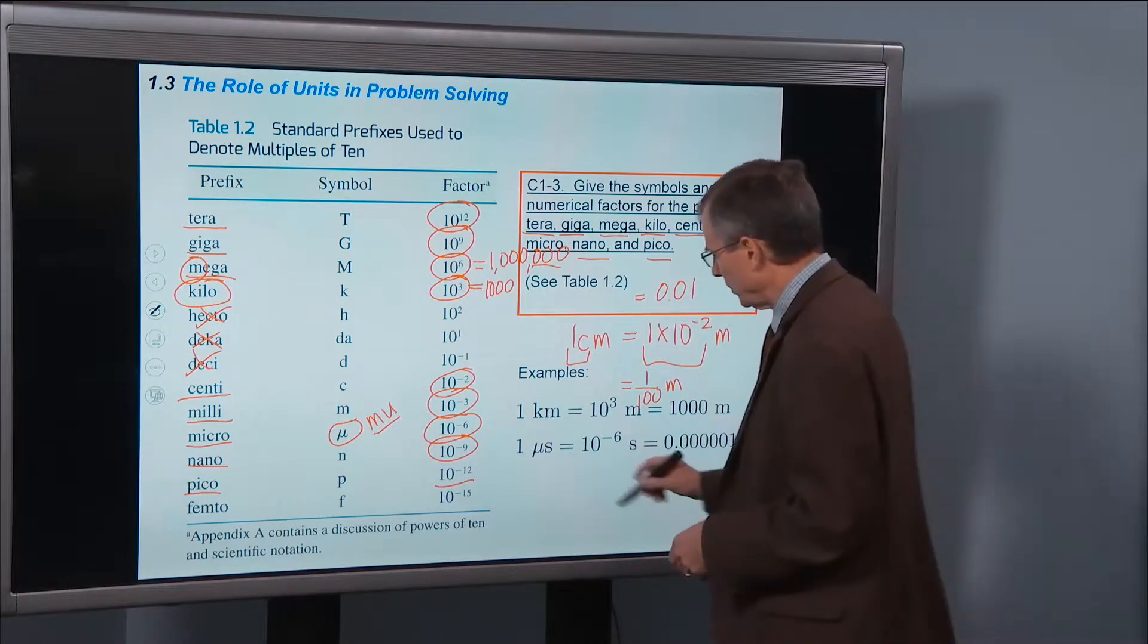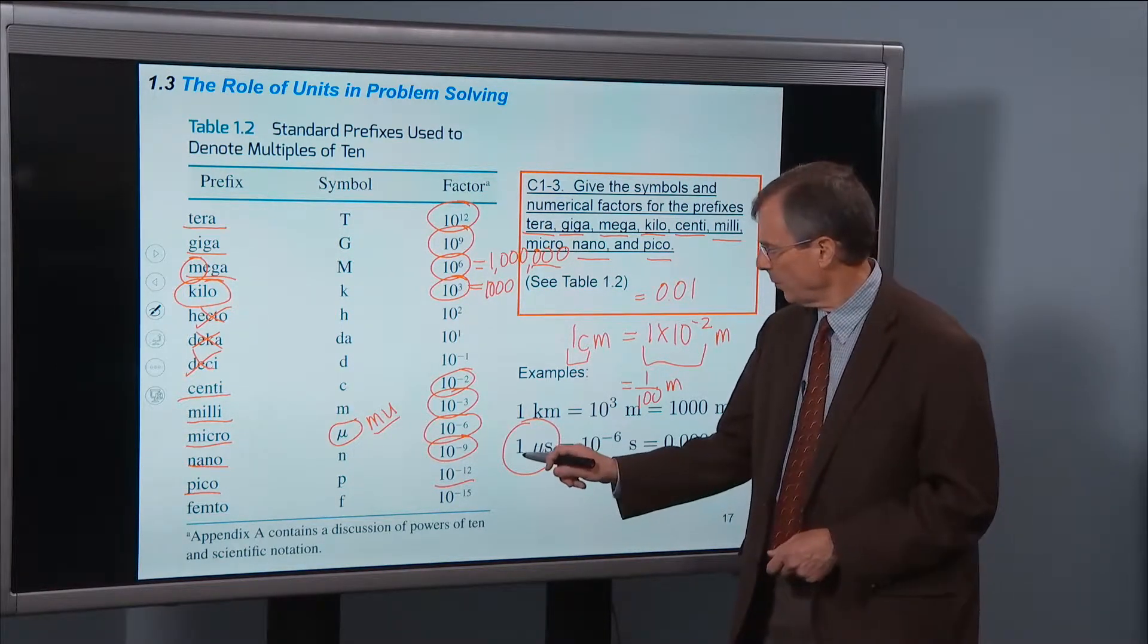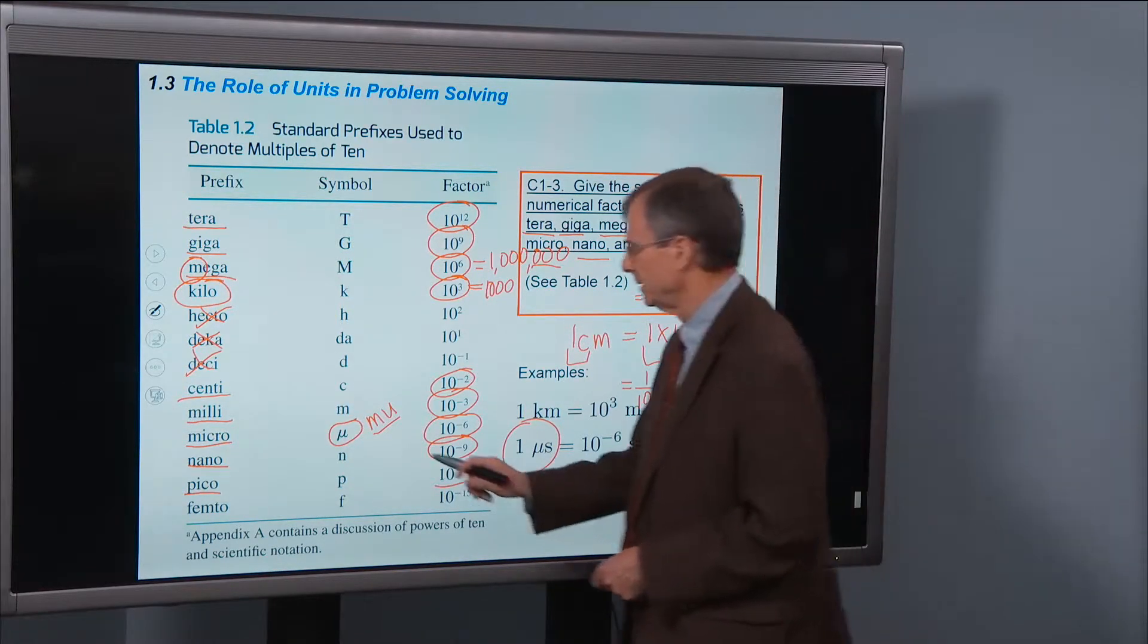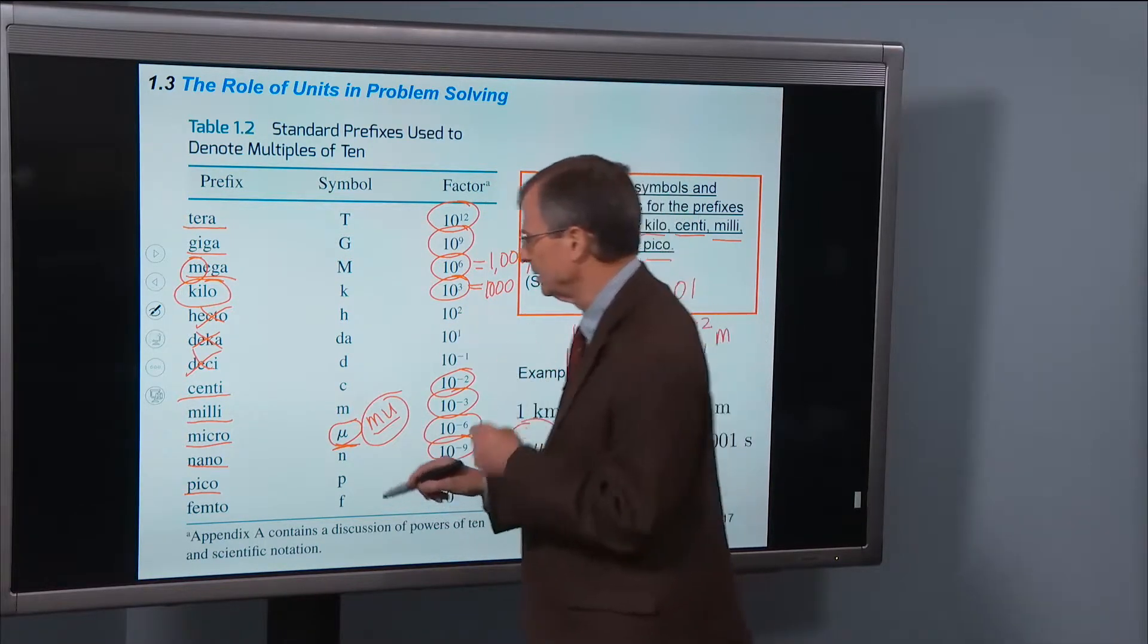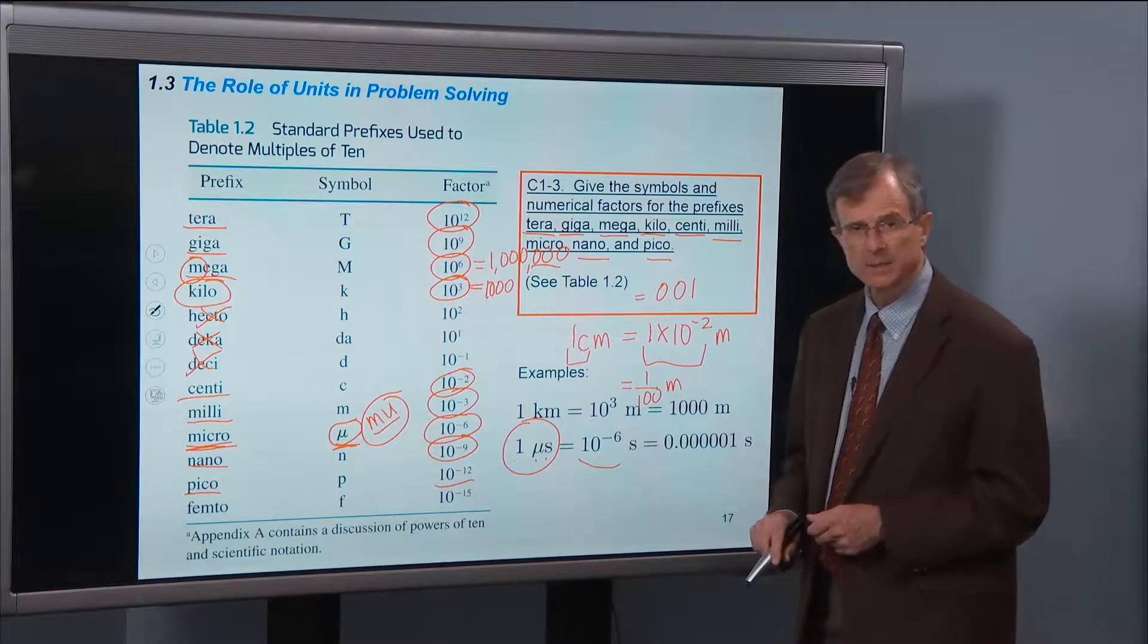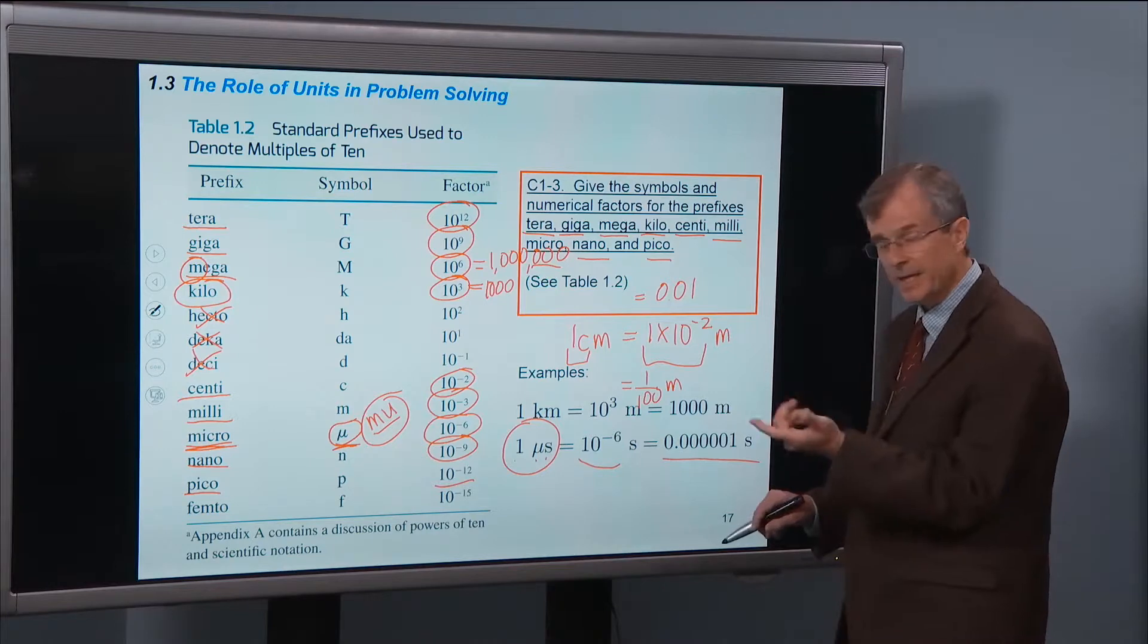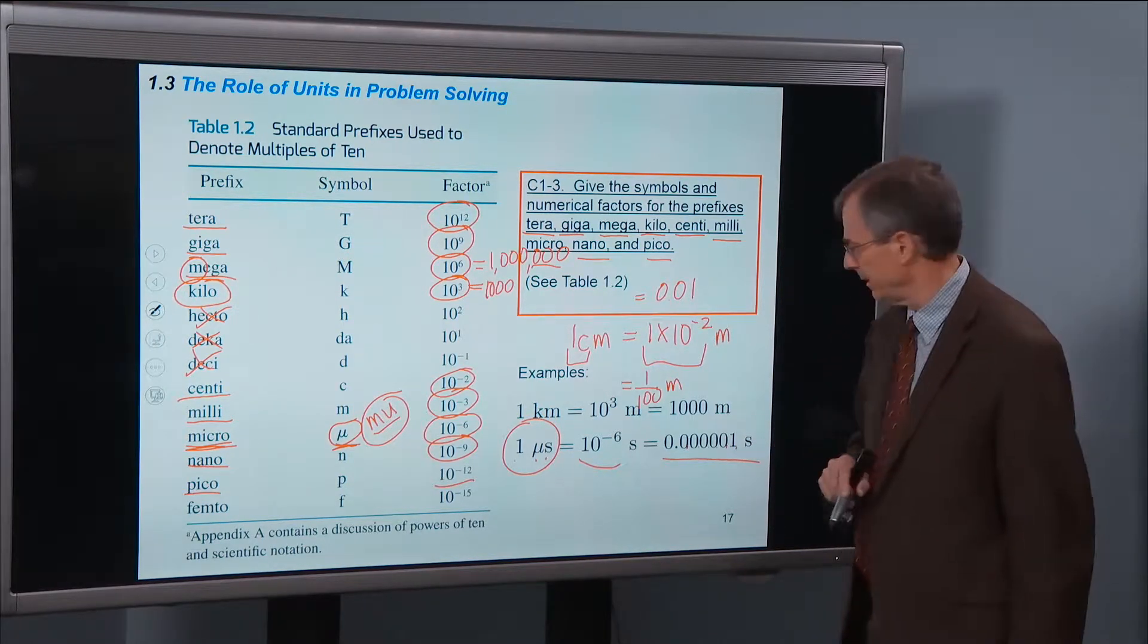Here's another example. How do I read that in English? One microsecond. So this mu, that's the name of the Greek letter. But when we write this out, we say that's one microsecond. That's 10 to the minus 6 seconds, one millionth of a second. You've got to count over six decimal places - one, two, three, four, five, six to get one back.